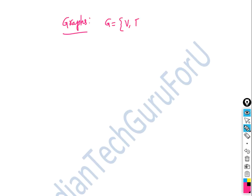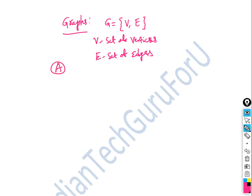A graph is defined as G, consisting of a set of vertices V and a set of edges E. V represents the set of vertices and E represents the set of edges. A graph contains at least one cycle, for example vertices A, B, C, D, E.